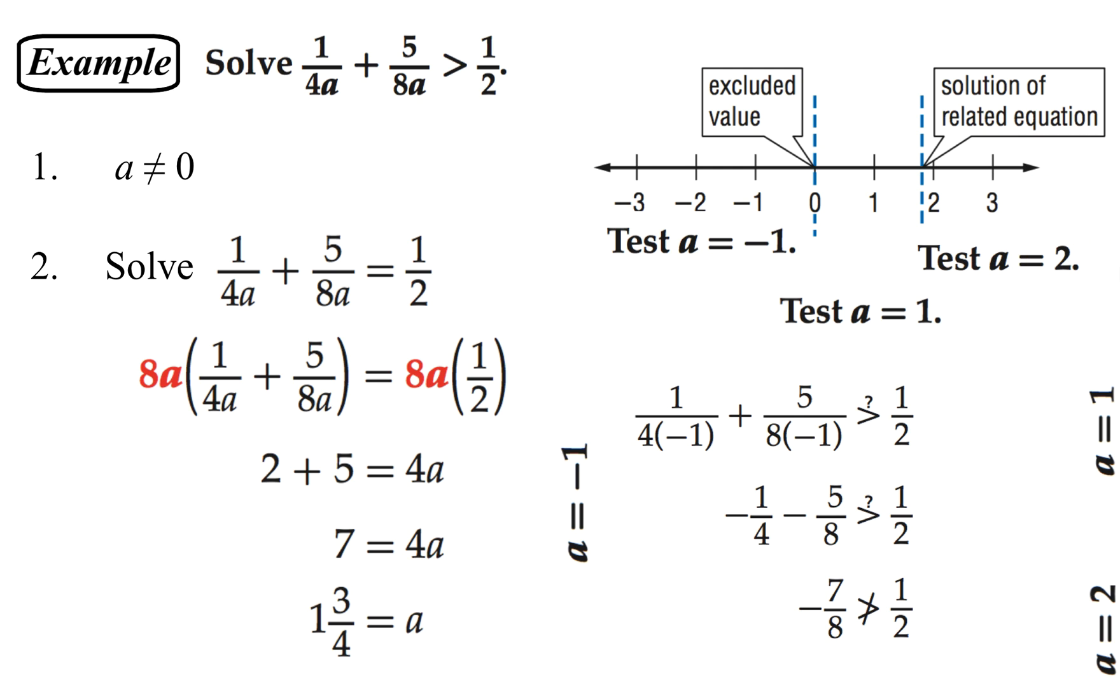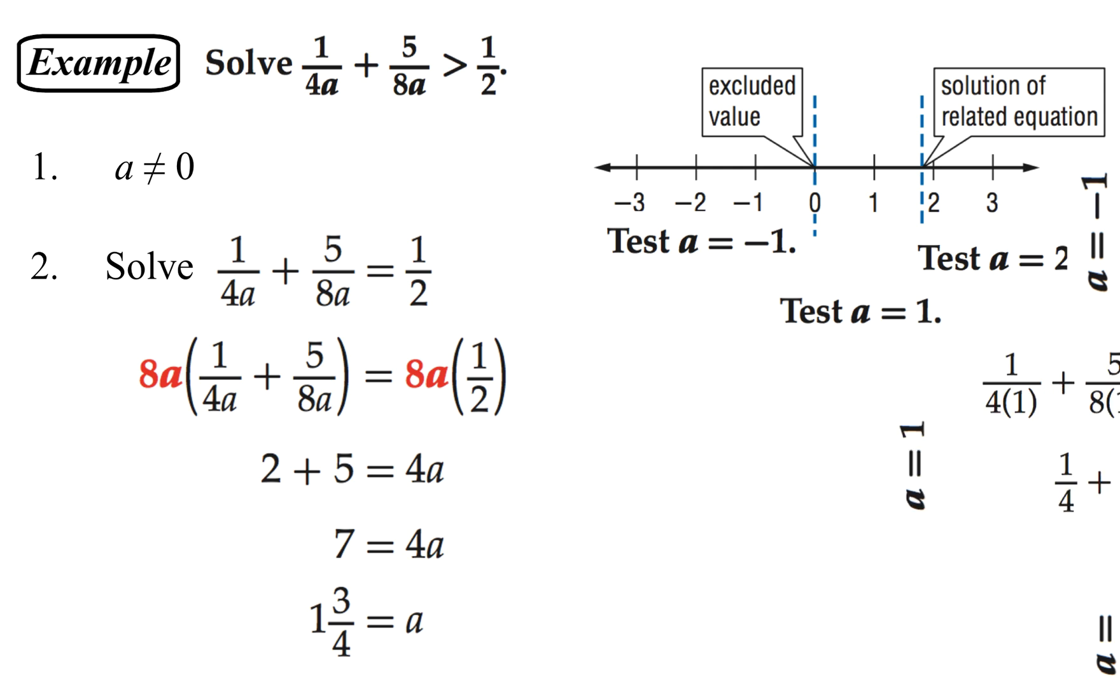Then let's go ahead and test A equals 1. That one does work. We end up with 7 eighths is bigger than 1 half. So 1 half is 4 eighths. So that's a true statement. So the stuff in between here works.